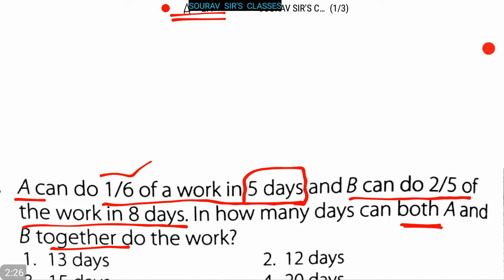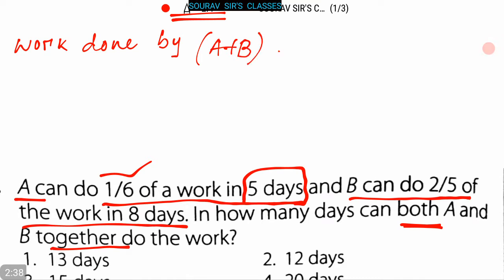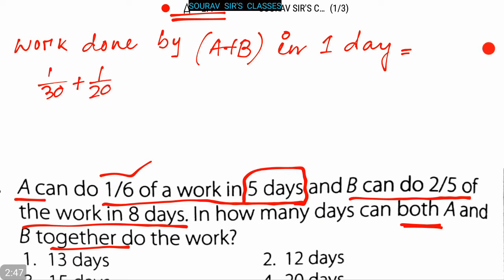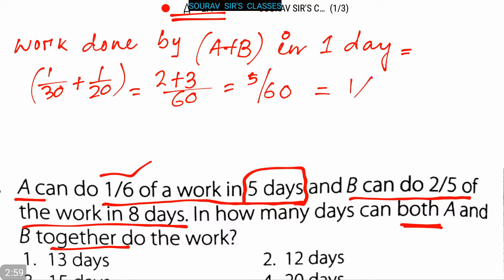Hence the work done by A and B together in one day is equal to 1/30 plus 1/20. That is equal to (2 + 3)/60, that is equals to 5/60, which equals to 1/12.